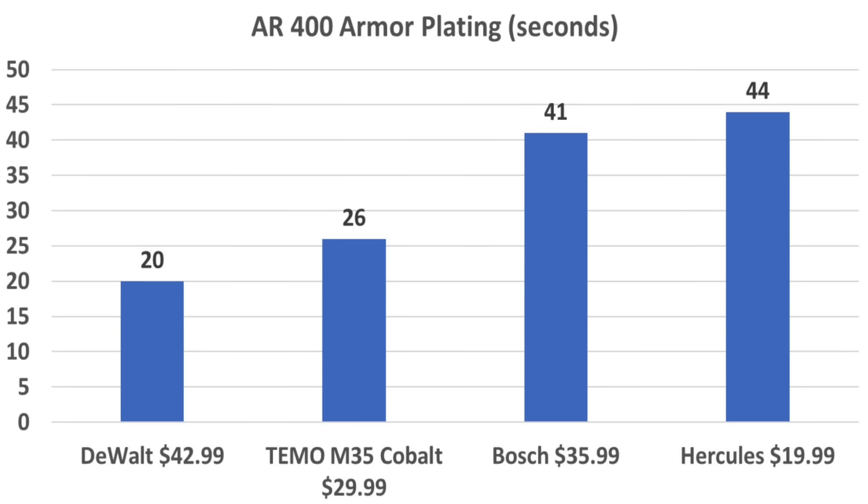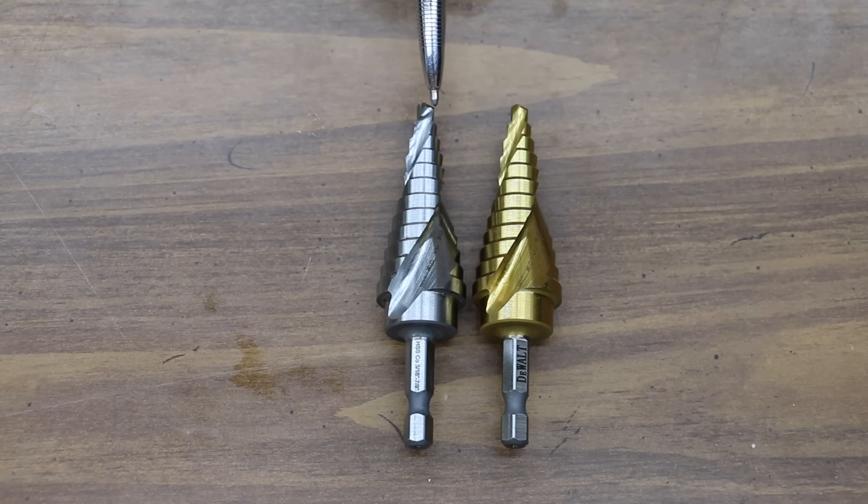DeWalt once again finished in first, drilling through the armor plating in only 20 seconds, but the Teemo finished in a very close second at 26, Bosch Turbo 41, and Hercules 44. Unfortunately, the Makita, Lennox, and Milwaukee weren't able to drill through the armor plating. I paid $30 for the Teemo and $43 for the DeWalt.